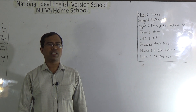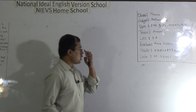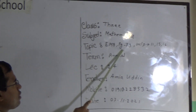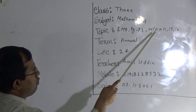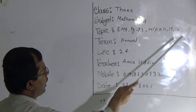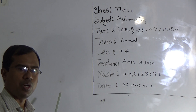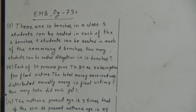Dear students, today I am going to take a math class for the students of class 3. Our today's topic: Elementary Mathematics Book, Page No. 73, Word Problems 11, 15 and 16. Dear students, this is lecture number 24. At first, we will solve problem number 11 from page number 73 of the Elementary Mathematics Book.